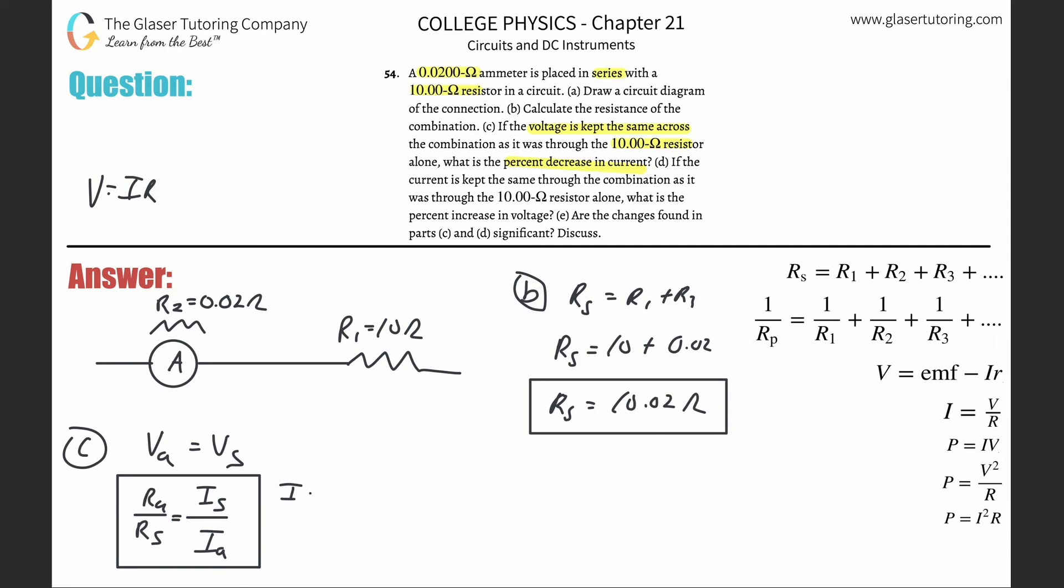So the current in series relative to the current alone will equal the resistance alone, which is just 10 ohms, divided by the resistance in series, which we found was 10.02. When we do this division, we get a fraction less than one: 10 divided by 10.02 equals 0.998.